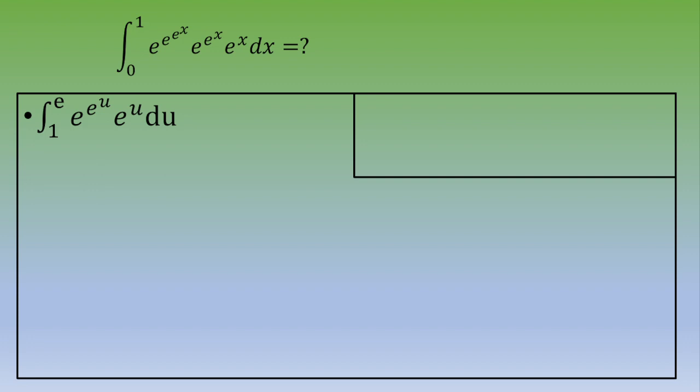And now we set v equals e to the u, so exactly the same process as what we did just before. E to the v equals e to the e to the u, and then if you differentiate, dv equals e to the u du.